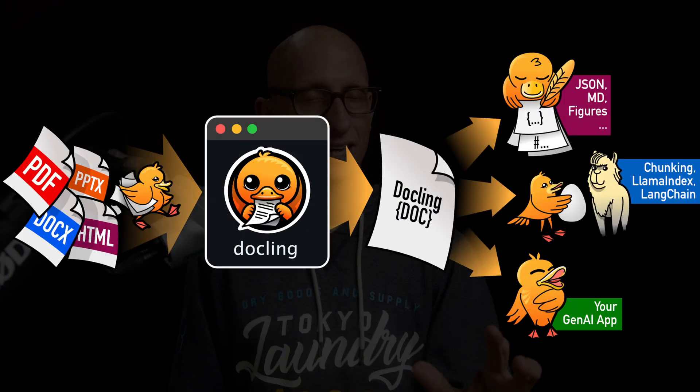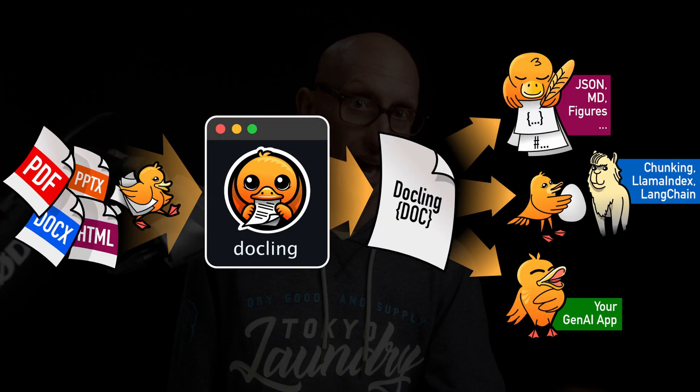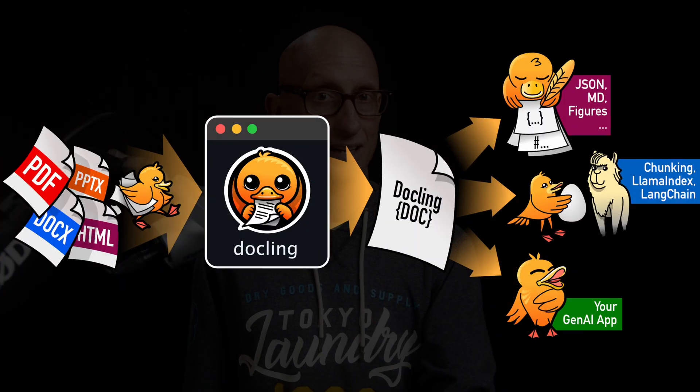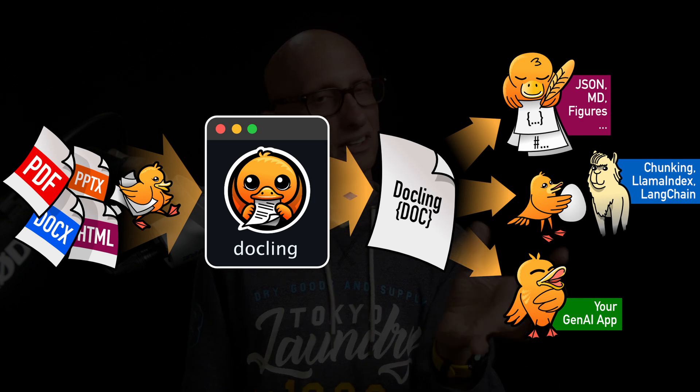I recently came across this library called Dockling that can convert, amongst other file formats, PDFs, PowerPoint files, and HTML pages to Markdown. So it got me thinking, maybe I can give it a try on Wikipedia pages and then see if an LLM can make sense of a Markdown table instead.